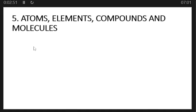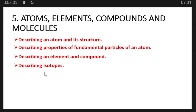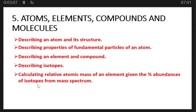Topic number five is atoms, elements, compounds, and molecules. Under this topic: describing an atom and its structure, describing the properties of fundamental particles of an atom, describing an element and compound, describing isotopes, and calculating relative atomic mass of an element given the percentage abundance of isotopes from mass spectrum.